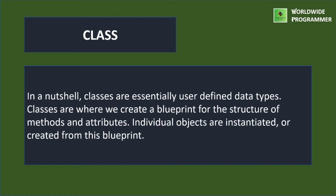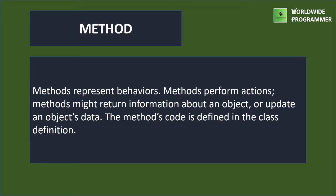In class, classes are essentially user-defined data types. Classes are where we create a blueprint for the structure of methods and attributes. Individual objects are instantiated or created from this blueprint. The last key term is method. Methods represent behaviors. Methods perform actions. Methods might return information about an object or update an object's data. The method's code is defined in the class definition. An operation required for an object or entity when coded in a class is called a method.